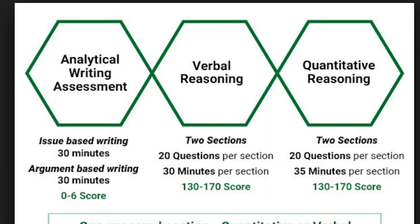GRE, the Graduate Record Examination, contains two parts. The first has both English and mathematics and is scored up to 340 marks. The second is essay writing, called Analytical Writing, graded on a scale of 0 to 6.